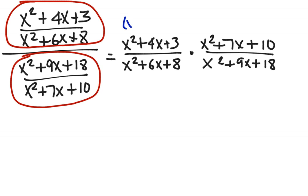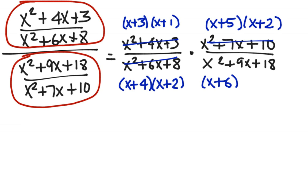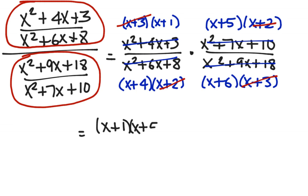Time to factor. We get x plus 3 times x plus 1 in the numerator of the first fraction. The denominator of the same fraction is x plus 4 times x plus 2. The numerator of the second fraction is x plus 5 times x plus 2. The denominator is x plus 6 times x plus 3. Again, canceling out factors that are common in numerator and denominator: x plus 3, x plus 2. So I have left in the numerator x plus 1 times x plus 5, over x plus 4 times x plus 6. And that would be my answer.